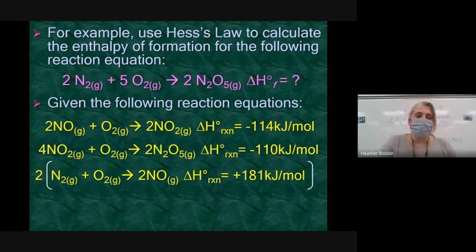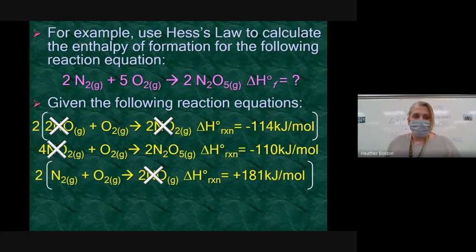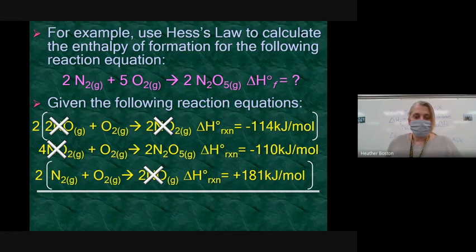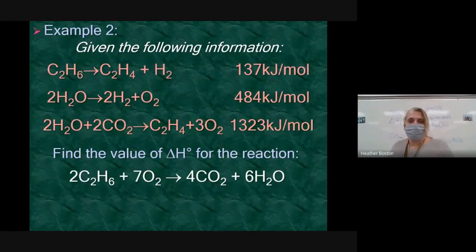So the other thing I need to do is not only do I have the things that I need in the reactive side and the things I need in the product side, but I need to get rid of the things that I don't need. For example, I have four NOs on the product side. So I'm going to multiply this so I have four NOs on the reactant side. When you have one quantity on the reactant side and one quantity on the product side, they will cancel. I will do some example problems for you, too, that are a little easier to see.